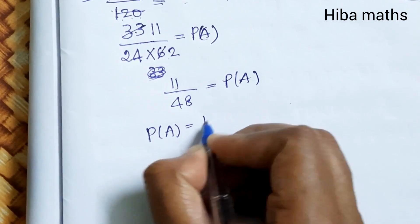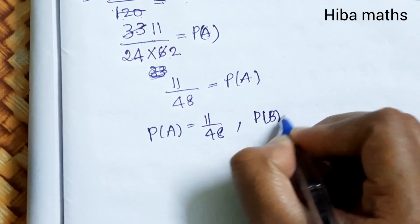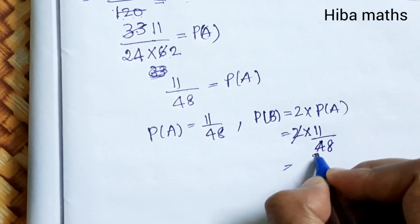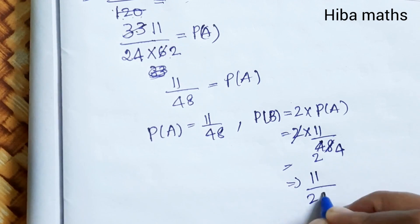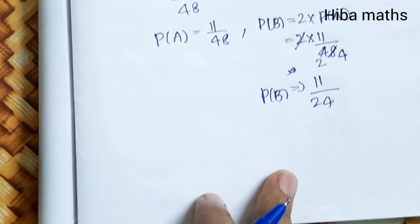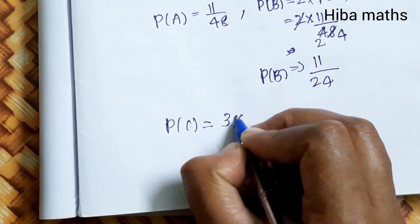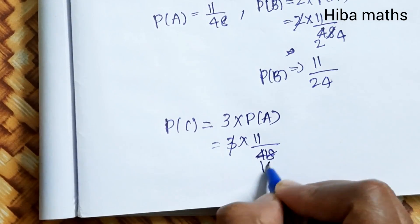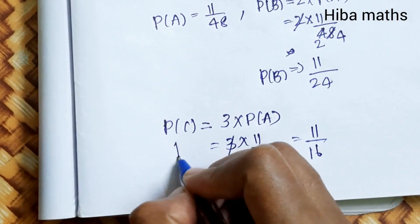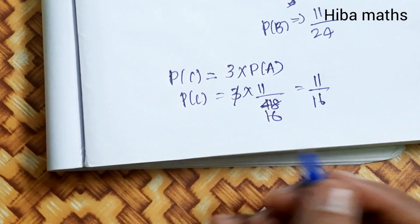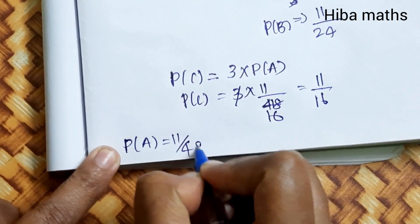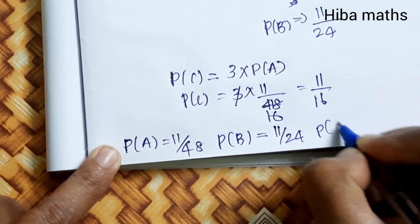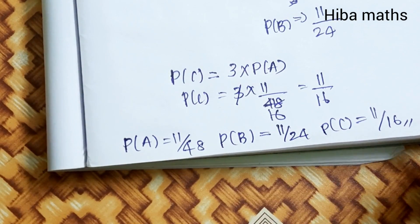So P(A) = 11/48. P(B) = 2 × P(A) = 2 × 11/48 = 11/24. P(C) = 3 × P(A) = 3 × 11/48 = 11/16. These are our final answers. It is easy to understand. Thank you so much for watching. See you next time.